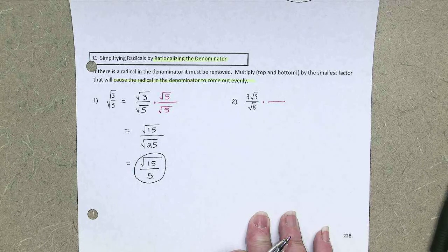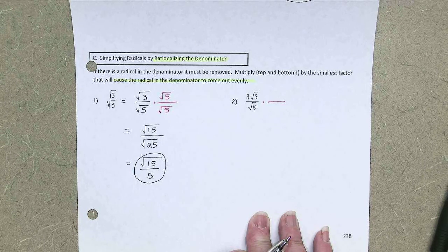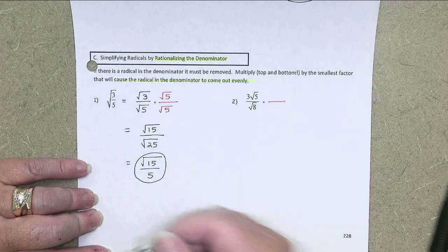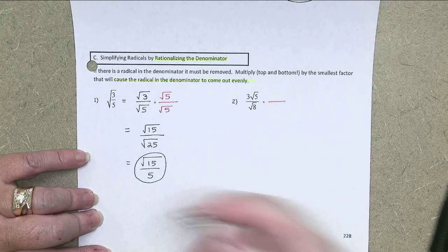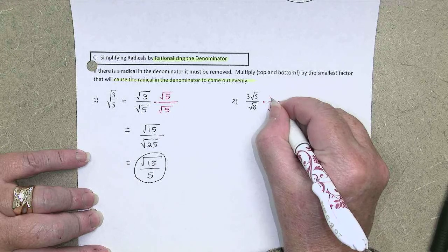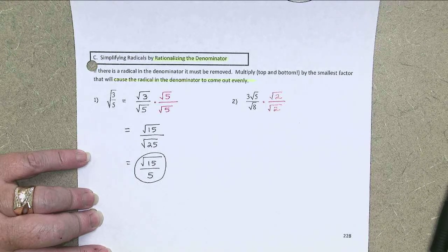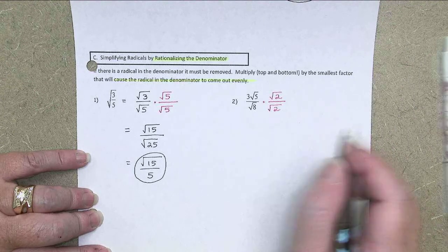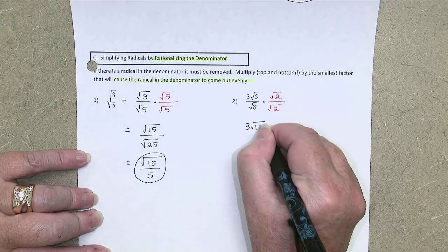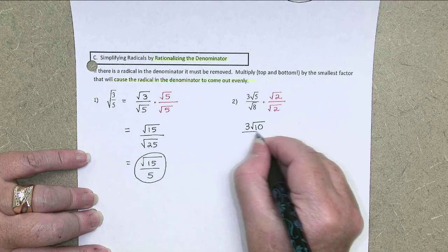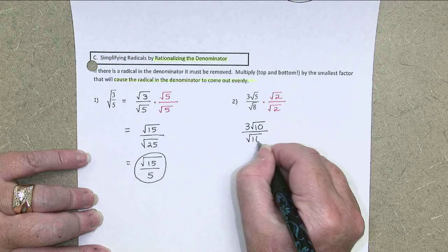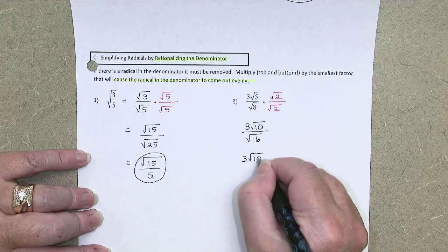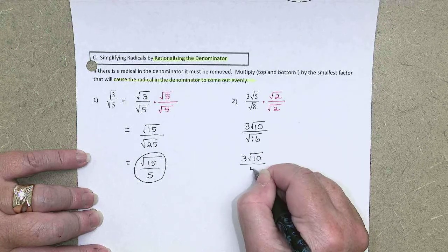But it's to your advantage to always pick the smallest number that will work. That way, you don't have more work later on simplifying. In this case, I'm going to say, well, if I just multiplied it by 2, I'd have 16, and that works out, right? So let's do that. Let's multiply by the square root of 2, top and bottom. That's going to give me 3 times the square root of 10 over the square root of 16, or 3 times the square root of 10 over 4.